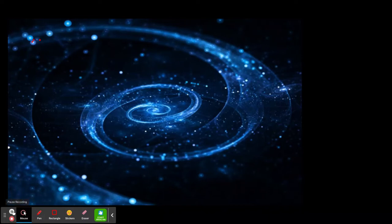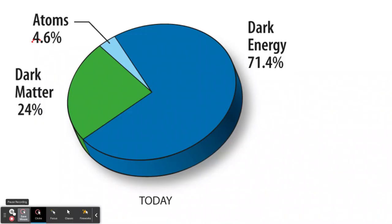Dark matter seems to be holding galaxies together and dark energy seems to be pulling the universe apart. We'll explain more about that in other videos. The percentages show atoms at about 4.6%, roughly five percent. So to review: what is matter? Anything that has mass and takes up space.